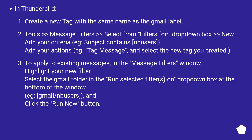In Thunderbird, create a new tag with the same name as the Gmail label. Go to Tools > Message Filters, select from the 'Filters for' drop-down box, then click New. Add your criteria, e.g., subject contains 'mbusers'. Add your actions, e.g., tag message, and select the new tag you created. To apply to existing messages, highlight your new filter in the message filters window, select the Gmail folder in the 'Run selected filters on' drop-down at the bottom, e.g., 'gmail/mbusers', and click Run Now.